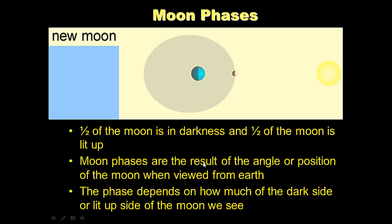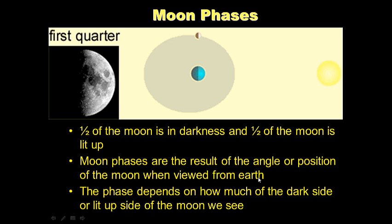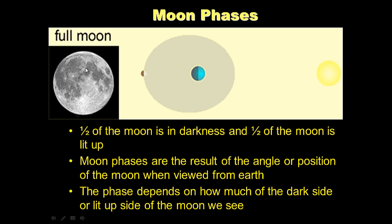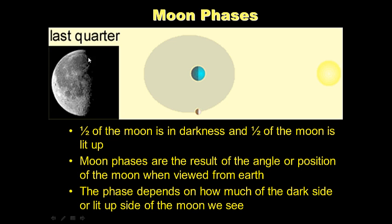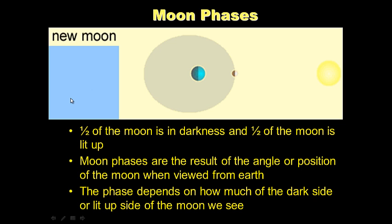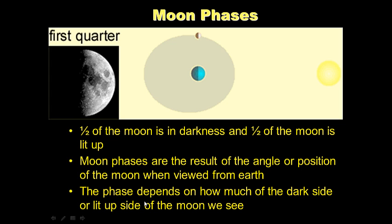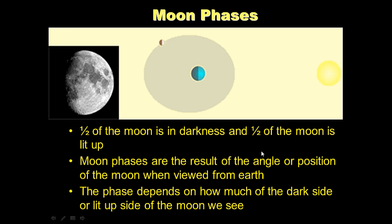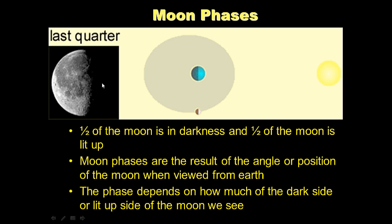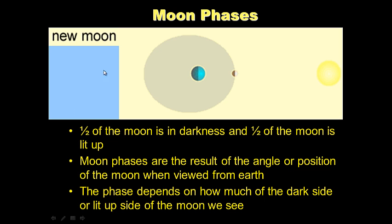Moon phases are the result of the angle or position of the moon when viewed from earth. So we see these different phases because we're looking at either the fully lit up side or the partially lit up side and partially the dark side or the whole dark side. The phase depends on how much of the dark side or lit up side of the moon we see. During a full moon we see the half side of the moon that's completely lit up. During a new moon we see the completely dark side of the moon.